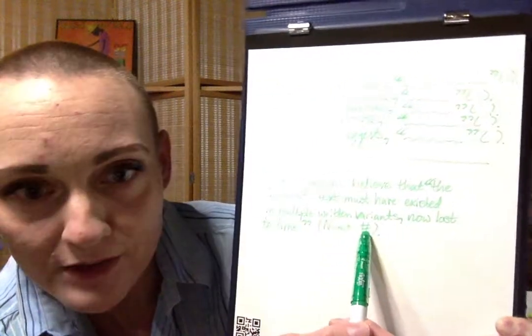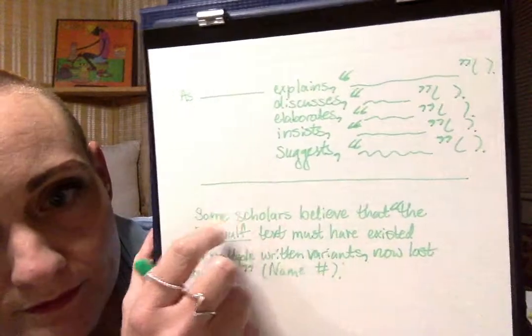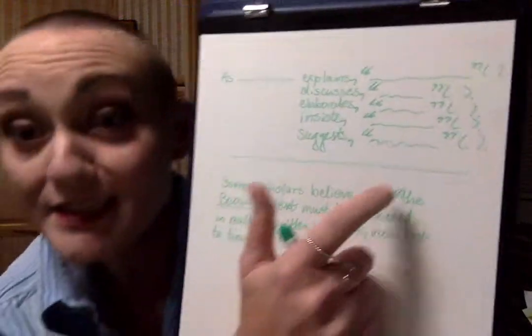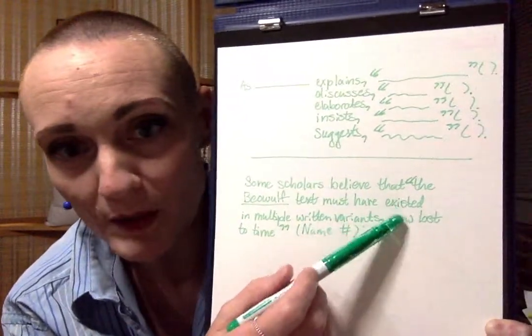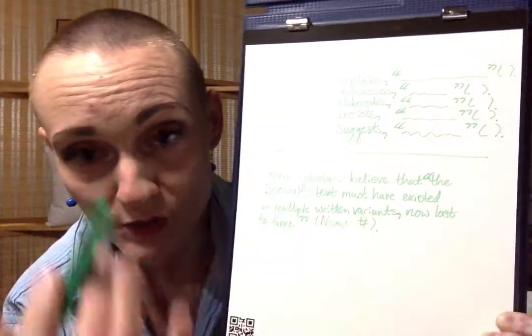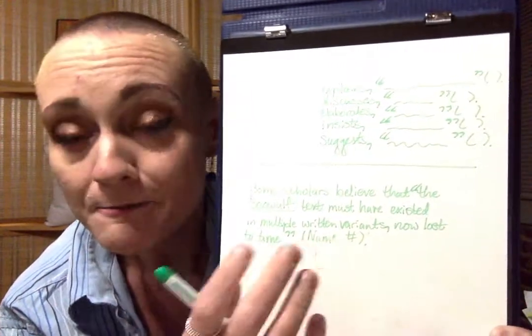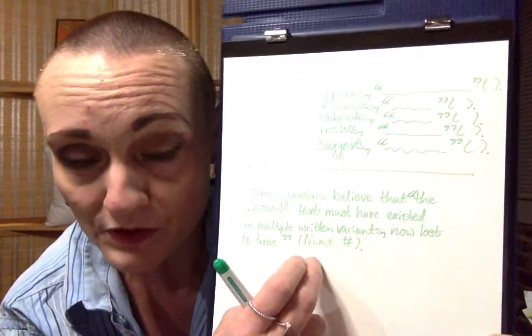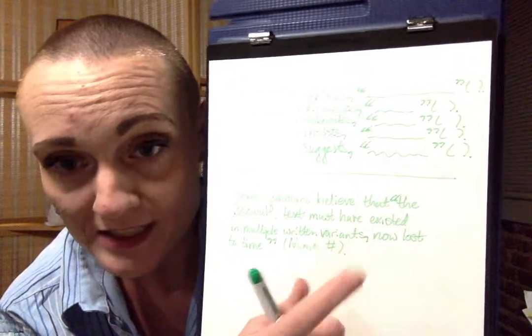You can see how it's seamless, right? It is just part of the sentence, and the only way that you're indicating that it is quoted material is with the quotation marks, and then at the end, you put the author's last name in the parentheses, you put the page number in parentheses, you close the parentheses, and then you put the period.